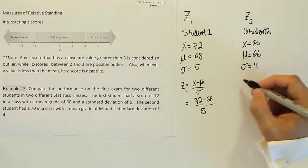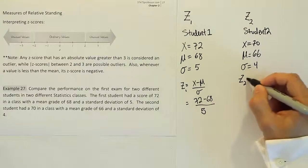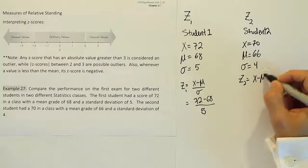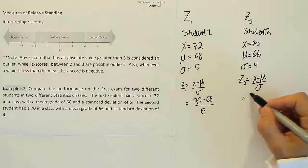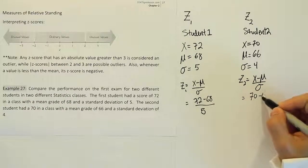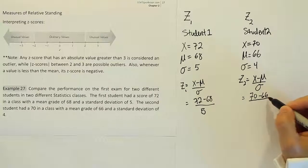We'll do the same for student 2. Again, x minus the mean over sigma. So the x here is 70 minus the mean of 66 divided by 4.